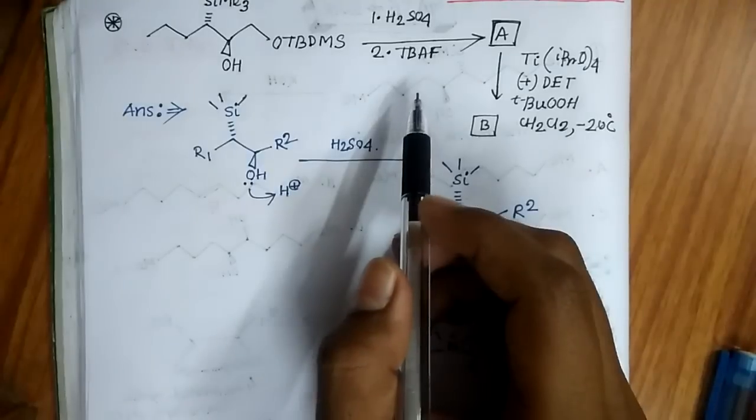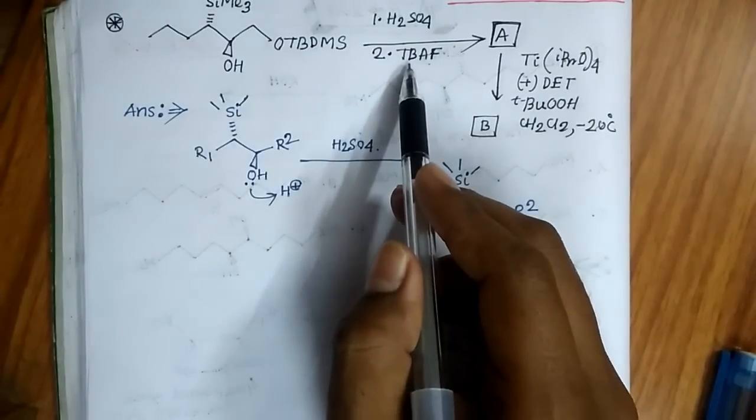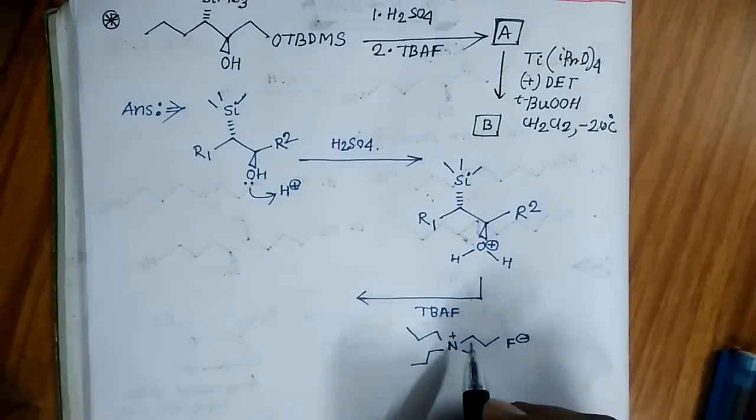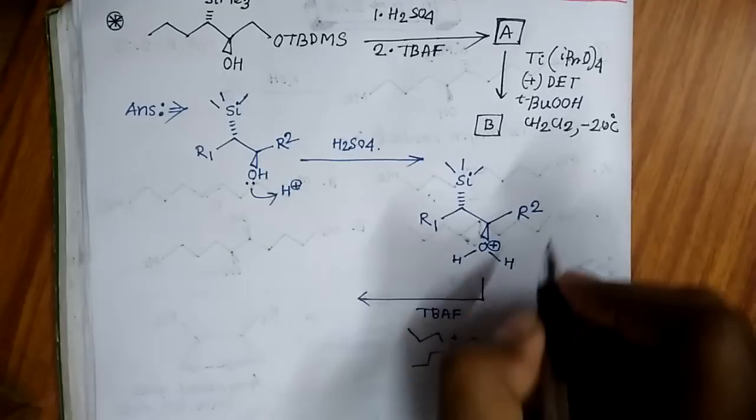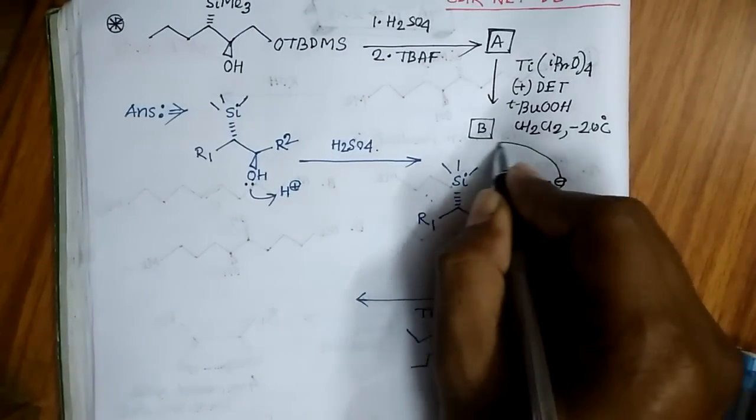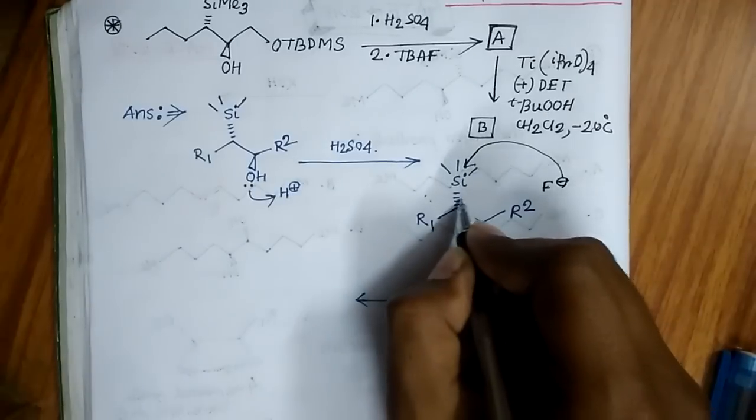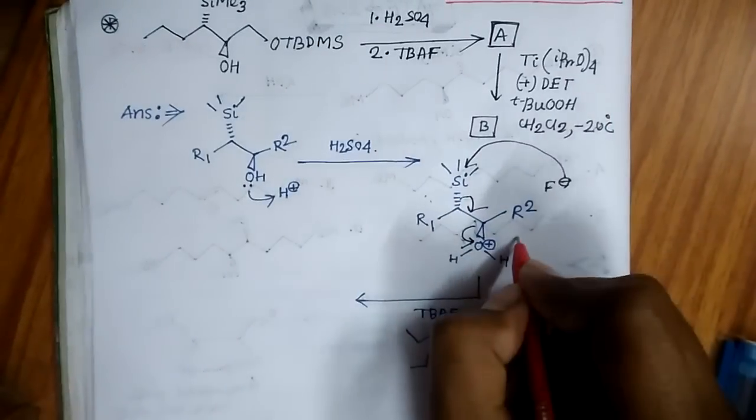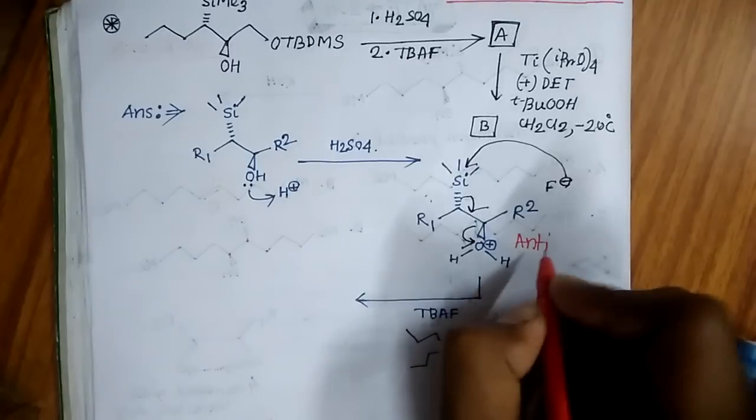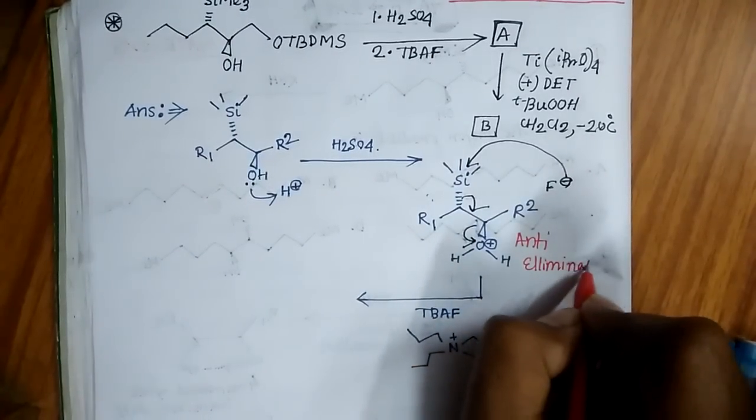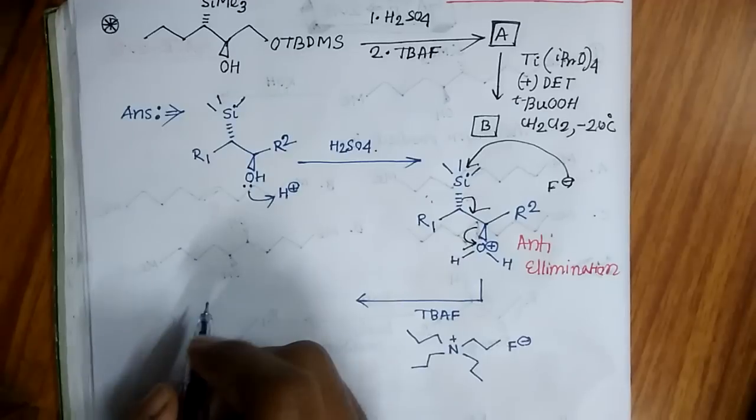The second reagent given is TBAF whose full form is tetrabutyl ammonium fluoride. Here four butyl groups are present with fluoride. Fluoride will attack at this silicon and the double bond will be formed here and water will leave. So that is anti elimination.